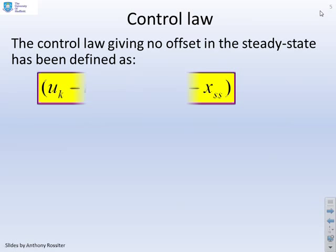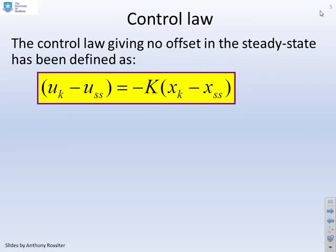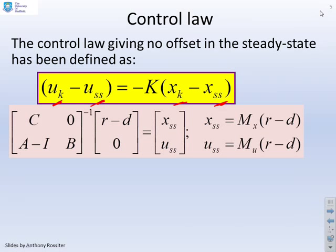A control law giving no offset in the steady state can be defined like this. So we have UK minus USS equals minus K times XK minus XSS. But what we're doing here is we're going to assume that the XSS is based upon the observer states. Now just as a by the by, I can,